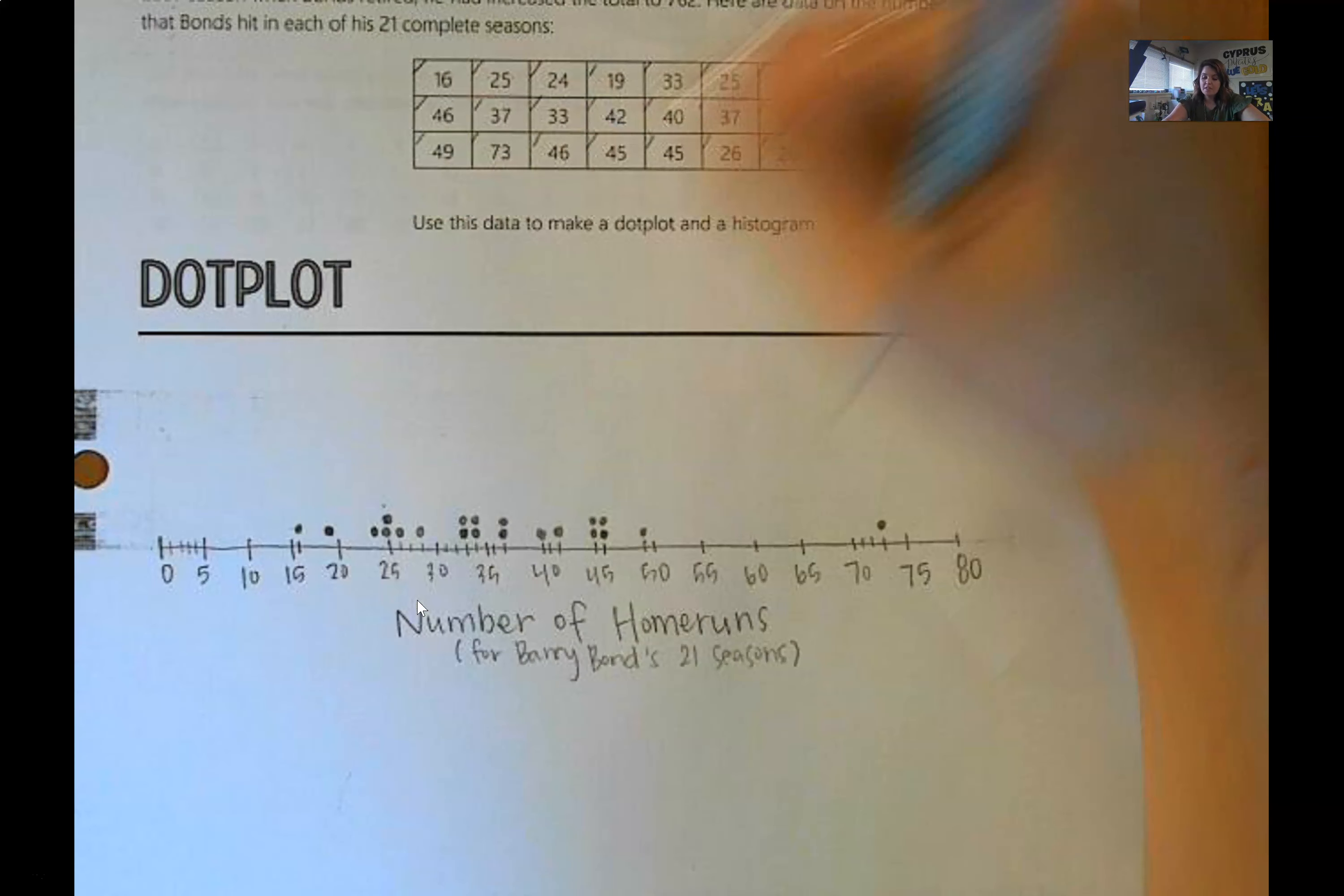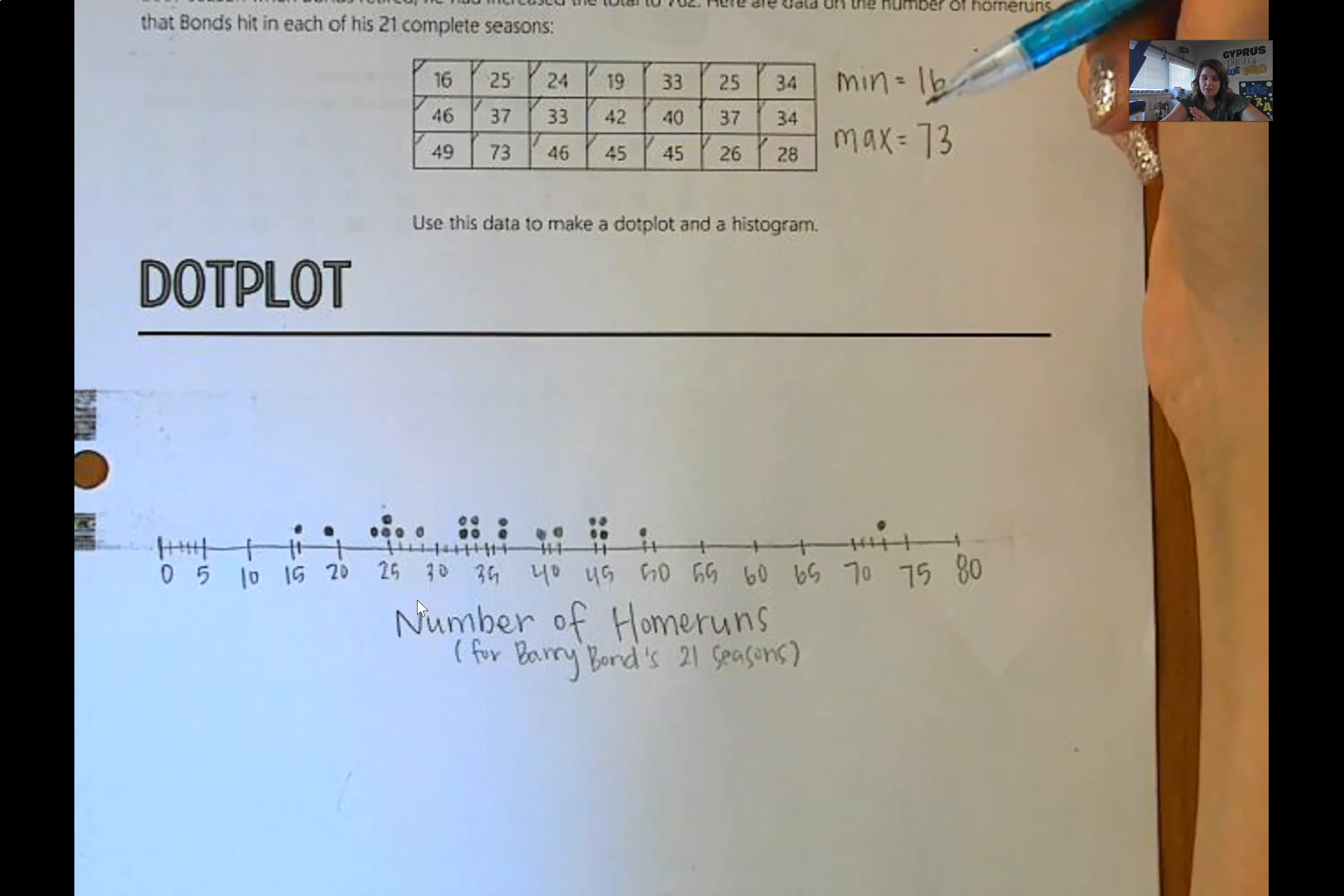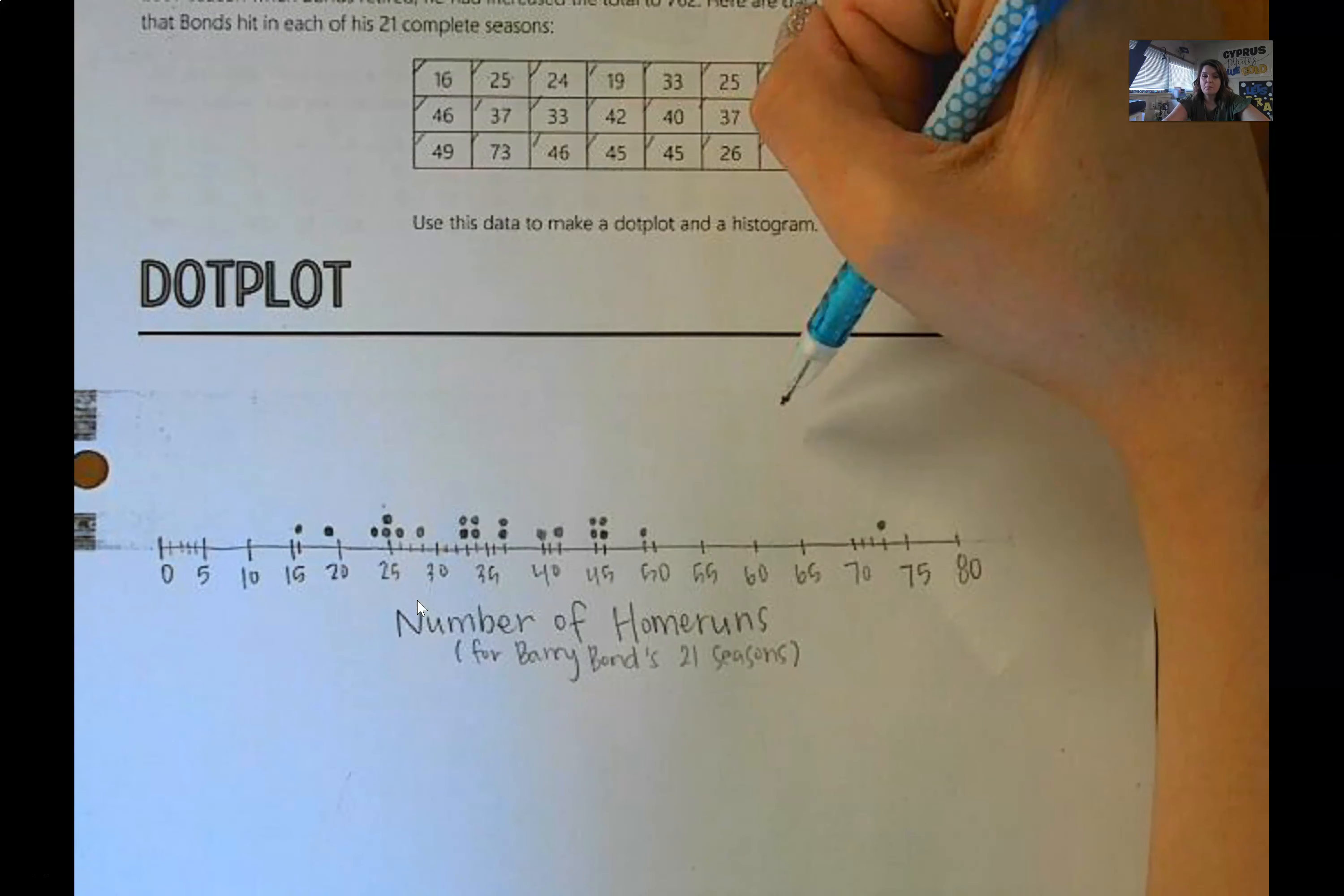So the shape, there's nothing special here. So then the next thing that sometimes we look at is how spread out our data is. And by sometimes I mean, we always look at that. So we look at shape. I can't, there's nothing interesting about this shape. We look at spread. This data set, I would say is very spread out. We're going all the way from 16 to 73. So I personally would say that this data set has a very big spread.